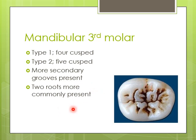Two roots are commonly present in the mandibular third molar; sometimes they are fused together. The roots are deflected towards the distal direction. Differentiating the quadrant among third molars is a bit difficult, but the buccolingual dimension is more on the mesial surface than on the distal surface — this helps differentiate the quadrant side of the mandibular third molar.